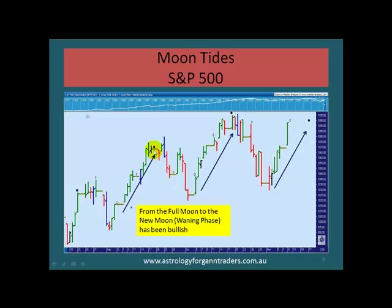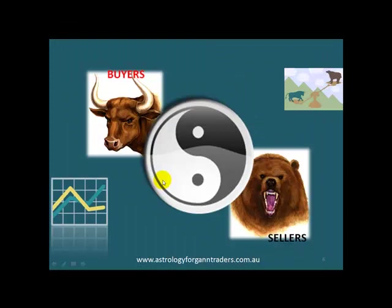And the opposite being the waxing phase — from the new moon to the first full moon here — is actually being quite bearish. So you can see that. A lot of people just use the moon quite efficiently to trade these emotional ups and downs. These are symbolism between the buyers and the sellers, and that's what we're dealing with every day.